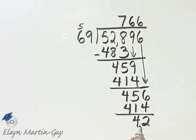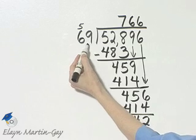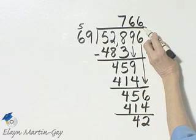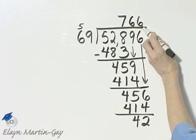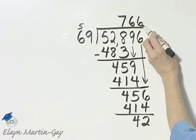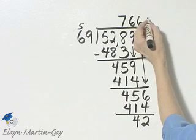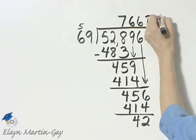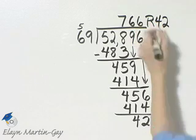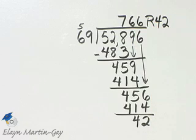That is my remainder. Notice again, this is less than this, so I know I wouldn't have 7 here. I know 6 is indeed correct in this place. And so, 766 remainder 42.